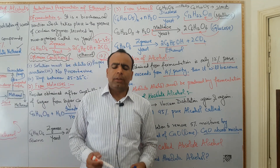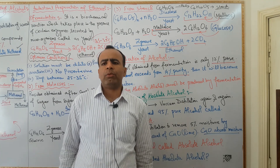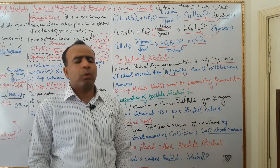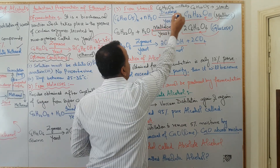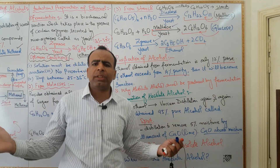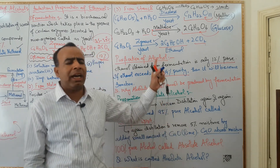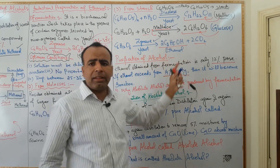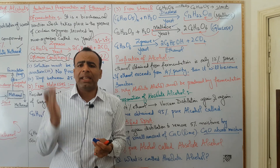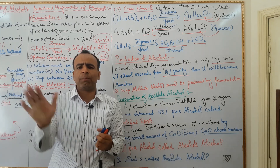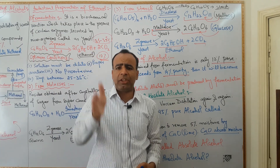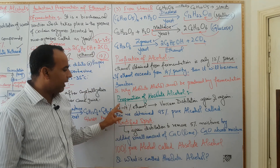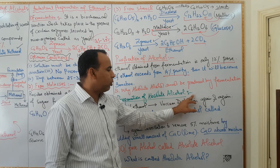The reason why we don't get 100 percent pure alcohol by fermentation is: this raw ethanol is only 12 percent pure. If we try to increase the purity beyond 14 percent, the enzymes involved — diastase, maltase, and zymase — become inactive and denature. Enzyme denaturation means starch won't convert to maltose, maltose won't convert to glucose, and glucose won't convert to ethanol. Fermentation always takes place only in the presence of enzymes.